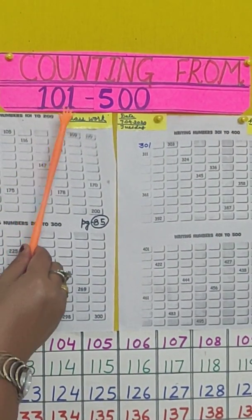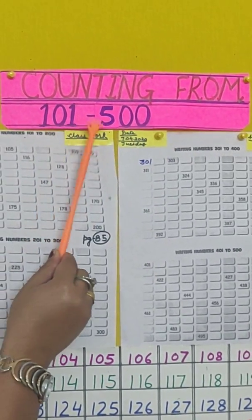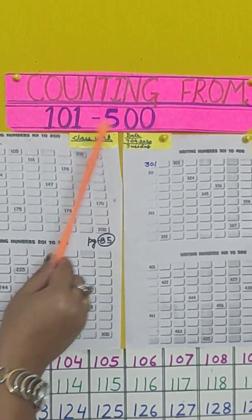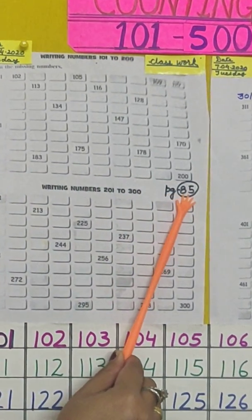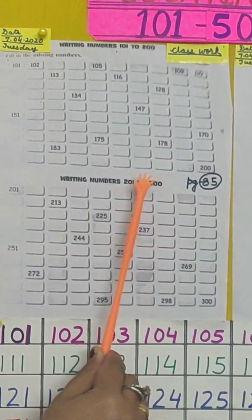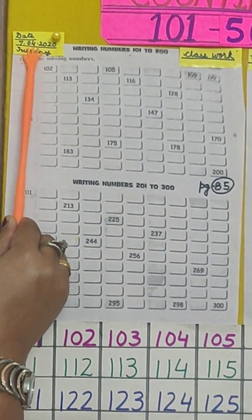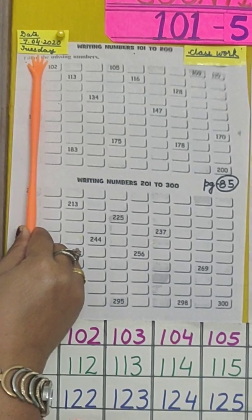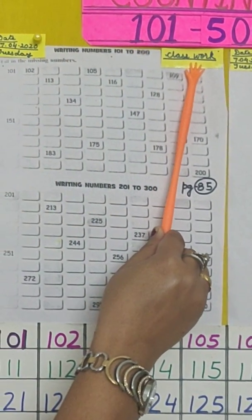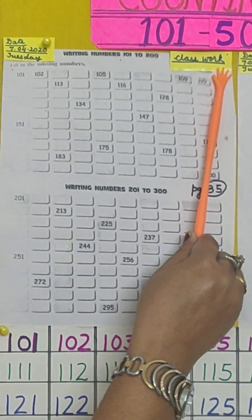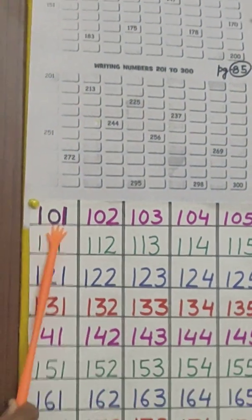Good morning students. Today we are going to do counting from 101 to 500. We are doing this from your pearl book, page number 85, semester 1. Children, the first thing you have to do is write the date and day on the left side of your page, and write classwork on the right side of your book. So let's start counting from 101.